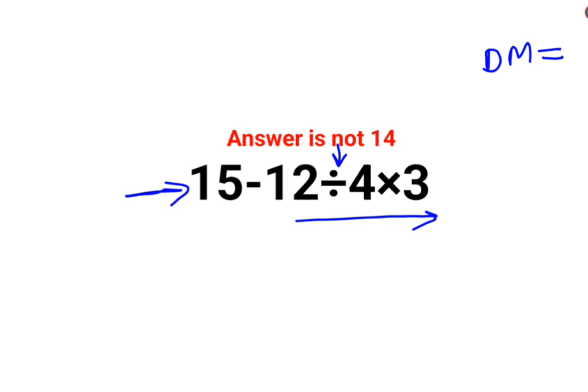So we'll keep 15 as it is, minus 12 divided by 4 is minus 3, multiplied by 3. Again, we'll keep 15 as it is, minus 3 multiplied by 3 is minus 9.